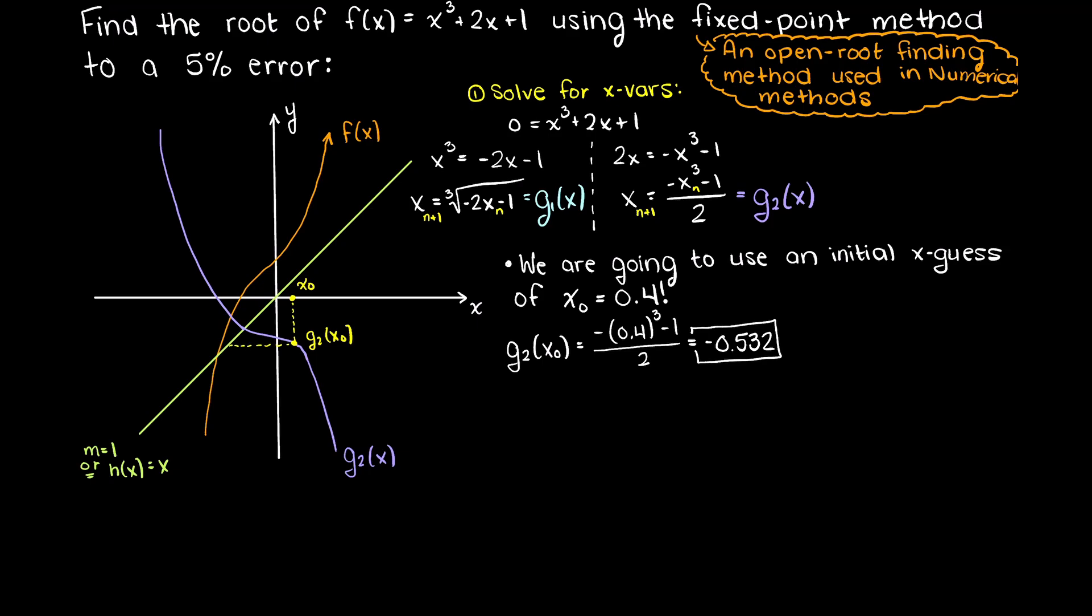Then we can calculate the relative error of this estimation by taking the absolute of our new guess minus our past guess divided by our newest guess. Therefore, at this iteration we have a relative error of 175%, so let's do another iteration and we'll see our error beginning to decrease.